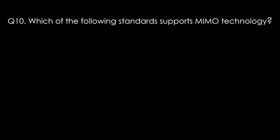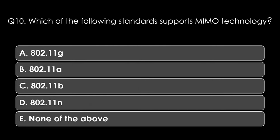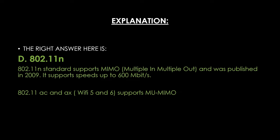Question ten. Which of the following standards supports MIMO technology? Options: 802.11g, 802.11a, 802.11b, 802.11n, or none of the above. The right answer is 802.11n. The 802.11n standard supports MIMO (multiple-in multiple-out) and was published in 2009. It supports speeds up to 600 Mbps. Note that 802.11ac and 802.11ax (Wi-Fi 5 and 6) support MU-MIMO, but that is not asked in this question.